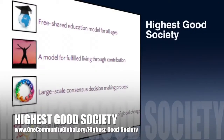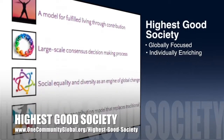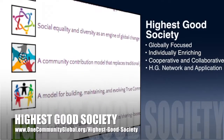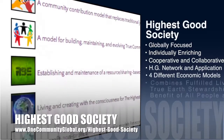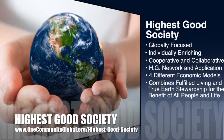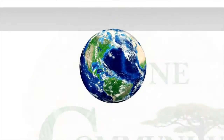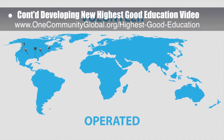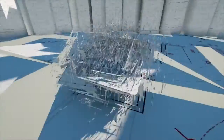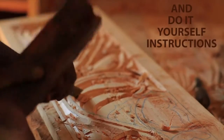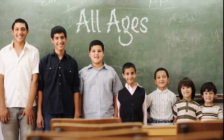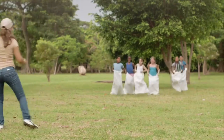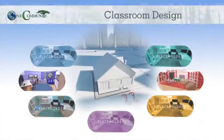One Community's approach to Highest Good Society is globally focused, individually enriching, cooperative and collaborative. It includes a Highest Good network and application, four different economic models, and combines fulfilled living and true earth stewardship for the benefit of all people and all life on this planet. This week the core team finished another several rounds of developing the new Highest Good Education video — including do-it-yourself instructions for all aspects of Highest Good Living. To help, share this video and visit our helping page.